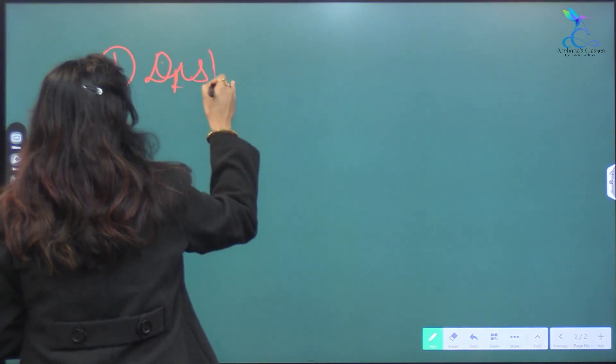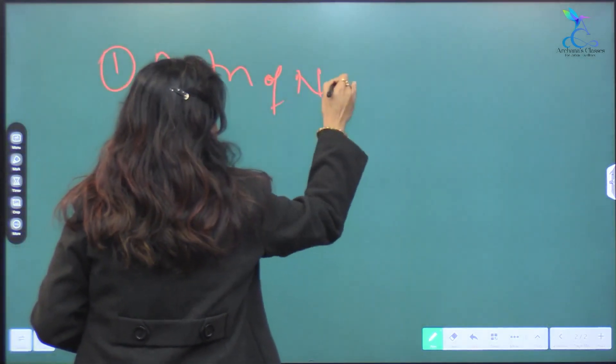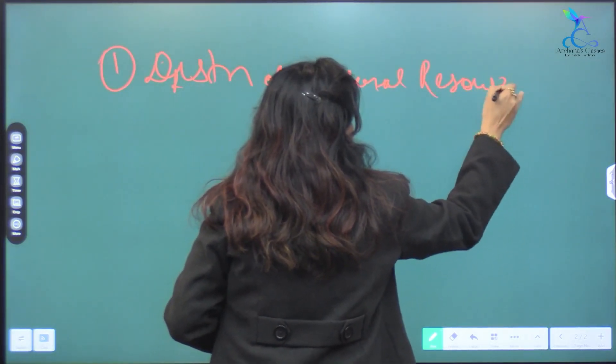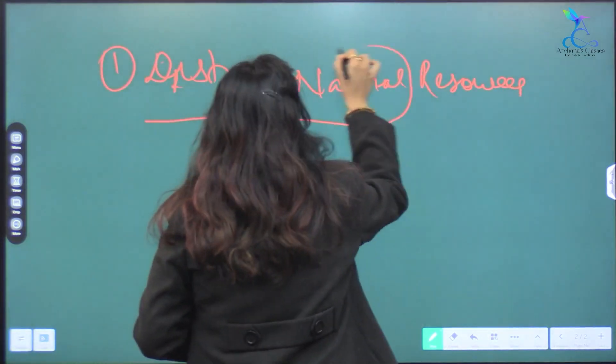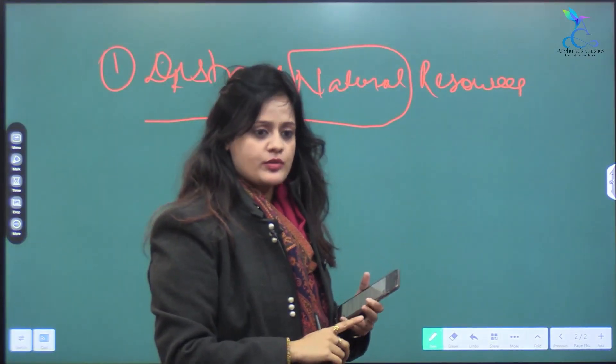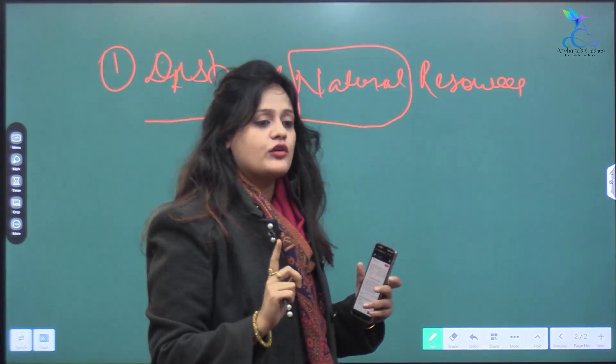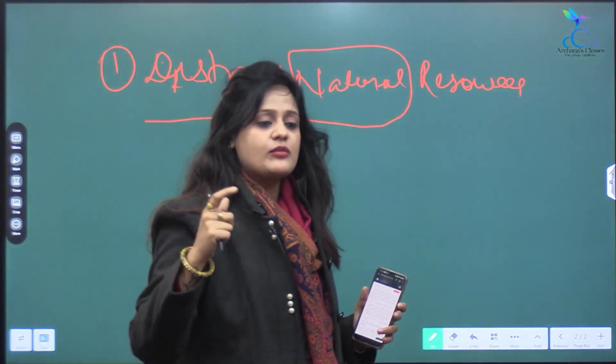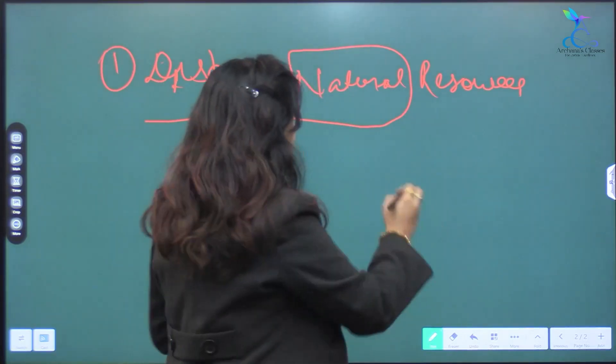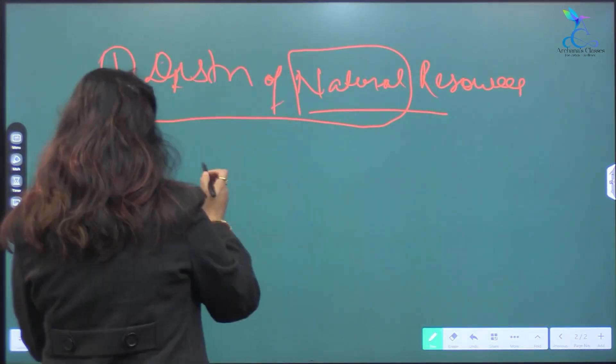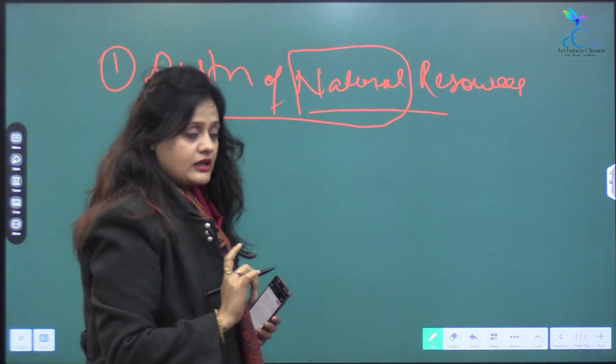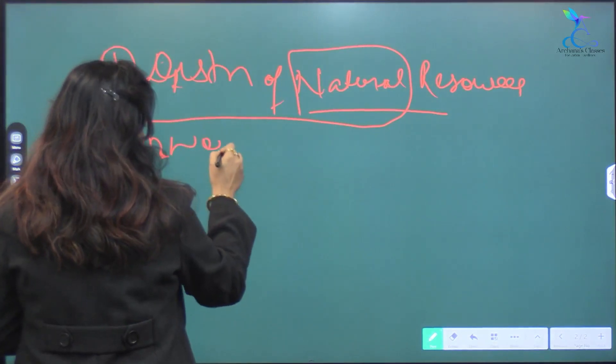First, distribution of natural resources. Distribution of natural resources means that in our world or in India there are many natural resources, for example, soil, crops, mining. We will see crop patterns, for example, hilly areas, terrace cropping. Then we will see mountain areas. So we will see natural resources. Then we will see natural resources in India and then we will see the world as well.